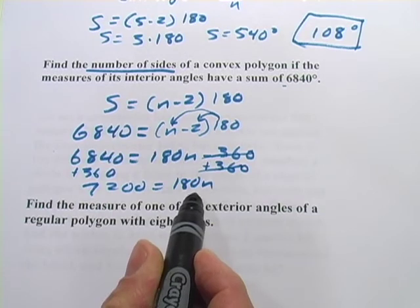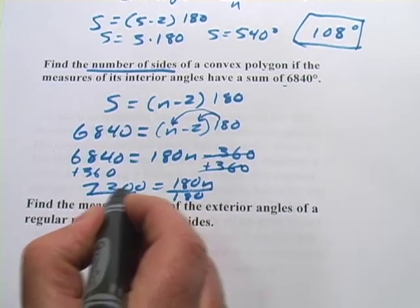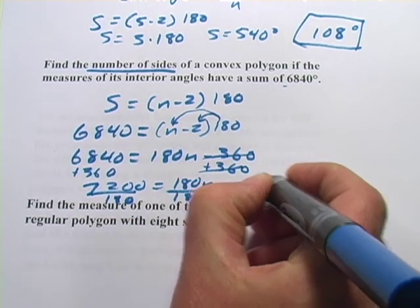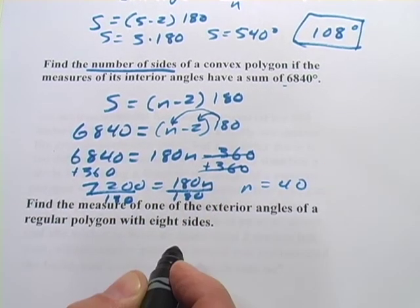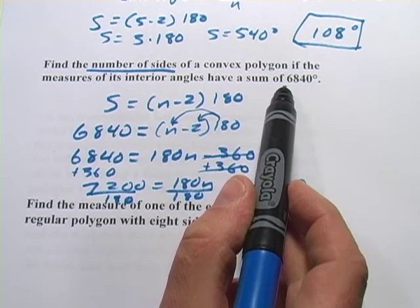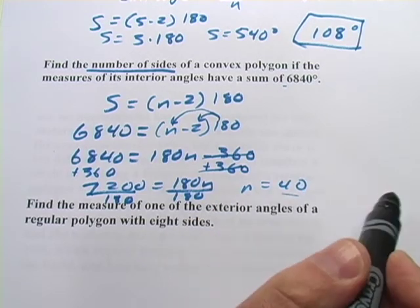And now, to solve for n, I divide both sides by 180, and that gives me n equals 40. So, if you're wondering what polygon has interior angles that add up to 6840 degrees, it's a 40-sided polygon.